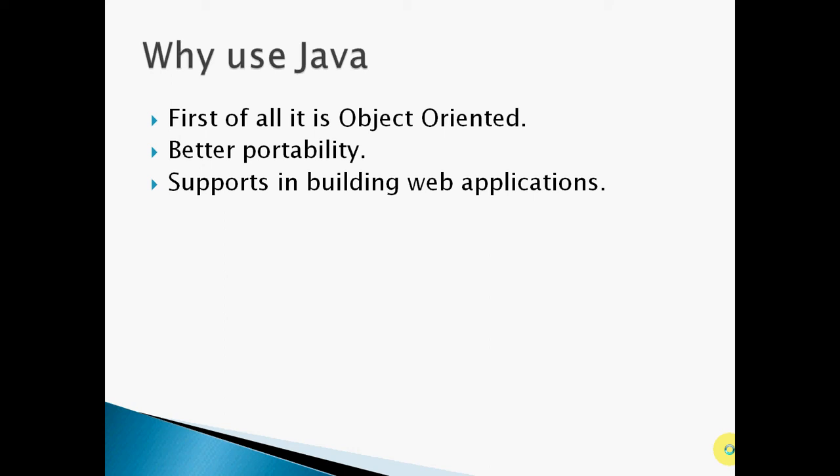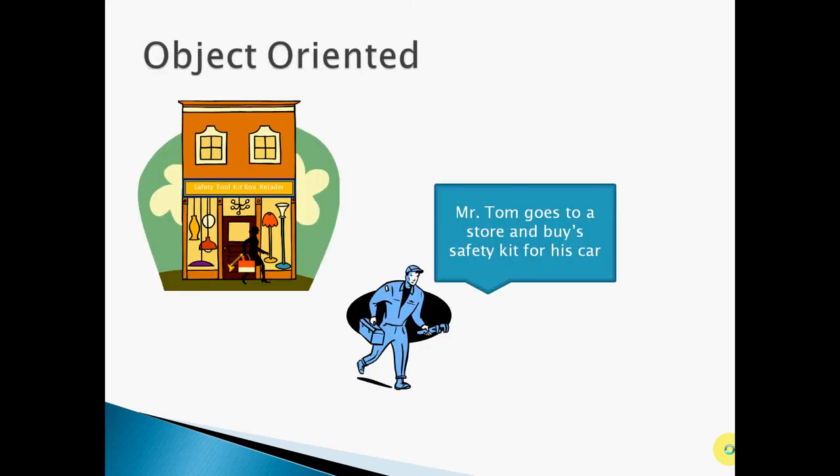Let's consider these points a little further to help understand why we should use Java. Let's talk about object-oriented and I'd like to give an example. That is the Safety Toolkit Box retailer store, which sells Safety Toolkit Boxes. It has N number of Safety Toolkit Boxes in its store. Let's take two characters: Mr. Tom and Mr. John. These two characters buy the Safety Toolkit Box from this store. Let's see how this works with object-oriented principles.